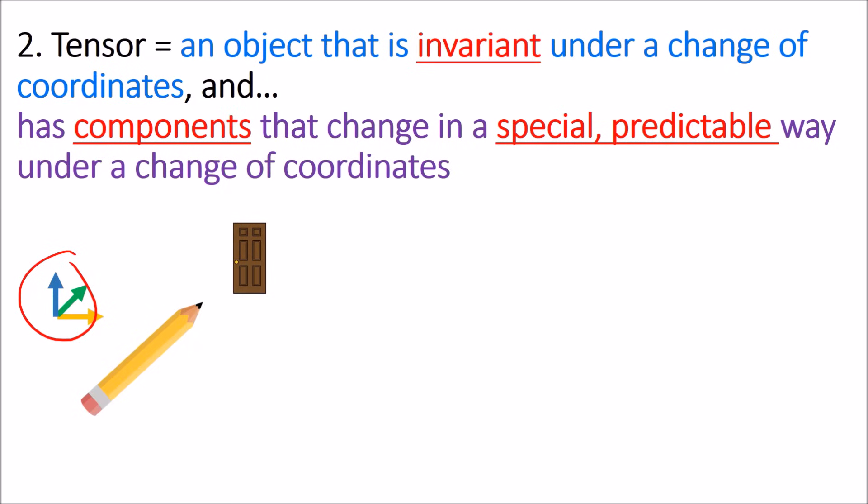And what we can do is we can measure the pencil using this coordinate system. So it looks like this pencil is made up of two yellow arrows, one green arrow, and then two blue arrows. Alright, so we can write this pencil as a linear combination of the coordinate vectors here.